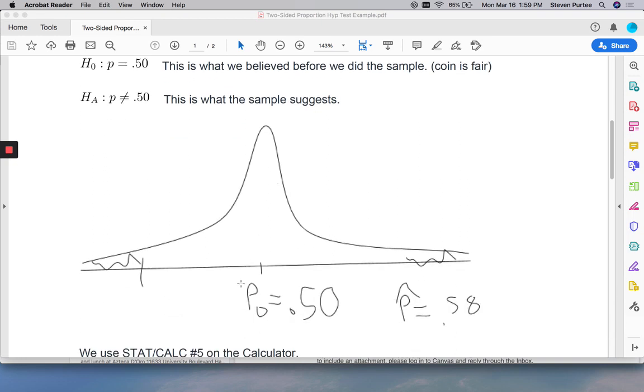So our picture, when we draw it out, will look like this. We'll actually end up shading both tails equally far apart. In the middle, the average sample should have 50% heads if the coin is fair. We got a sample success rate way up here, 58% heads. In a two-sided test, we shade both tails equally far away. So this would be, if we were to write it out, that would be below 42%. Anything above there or below there is equally weird.